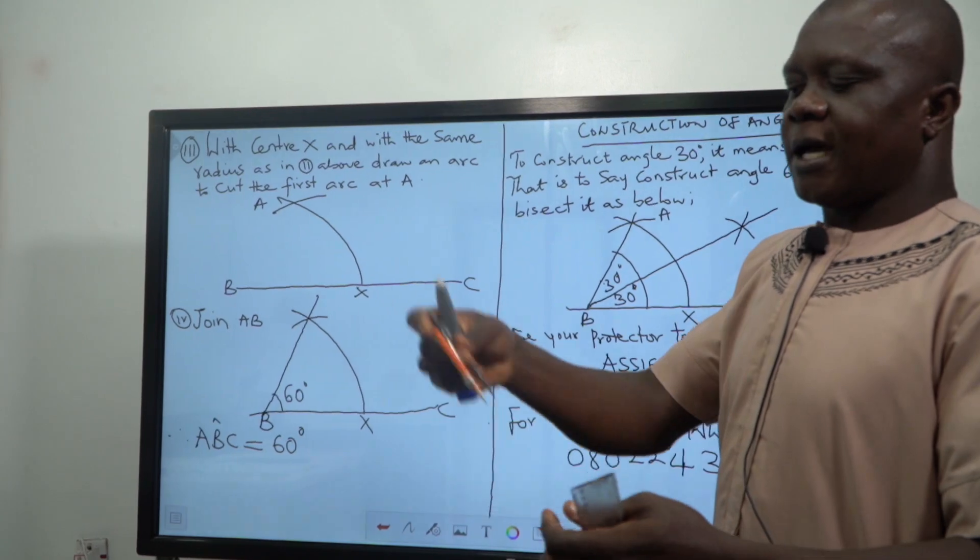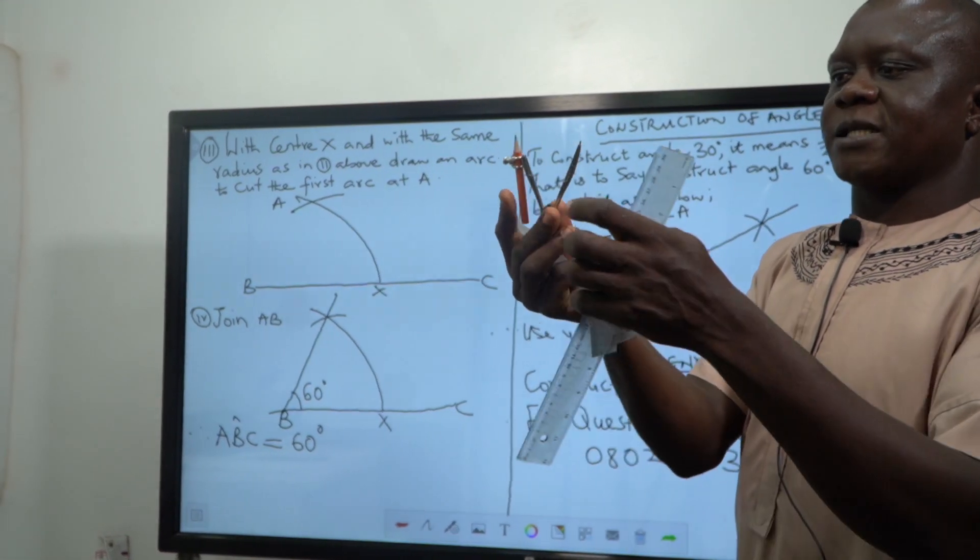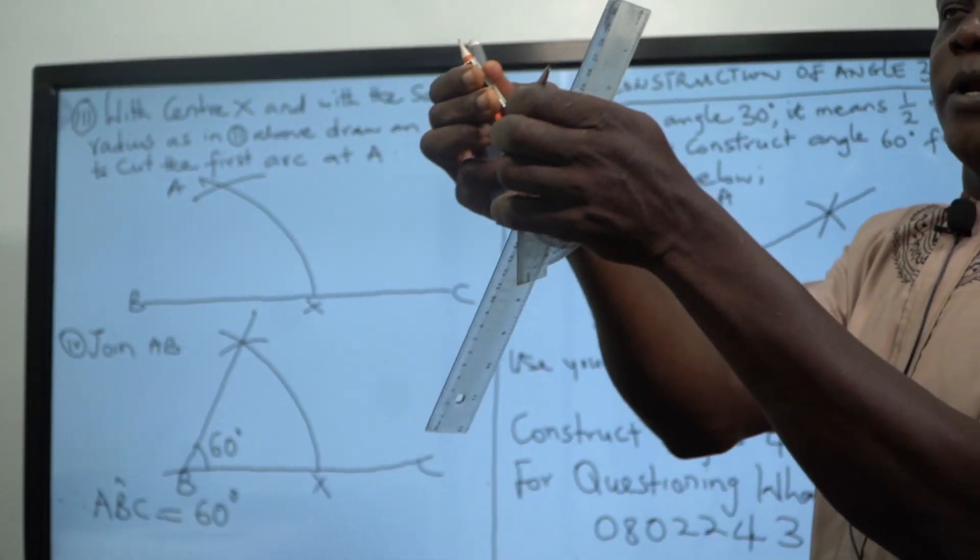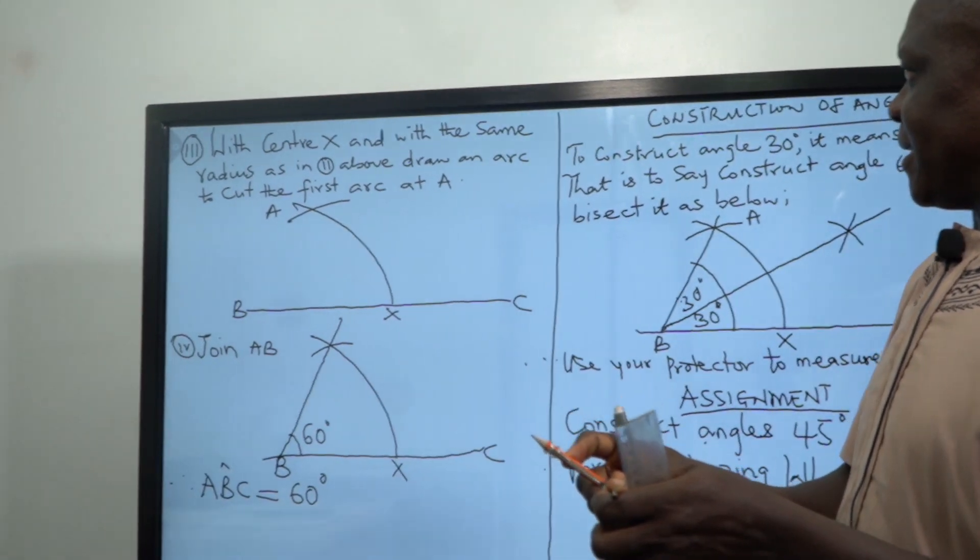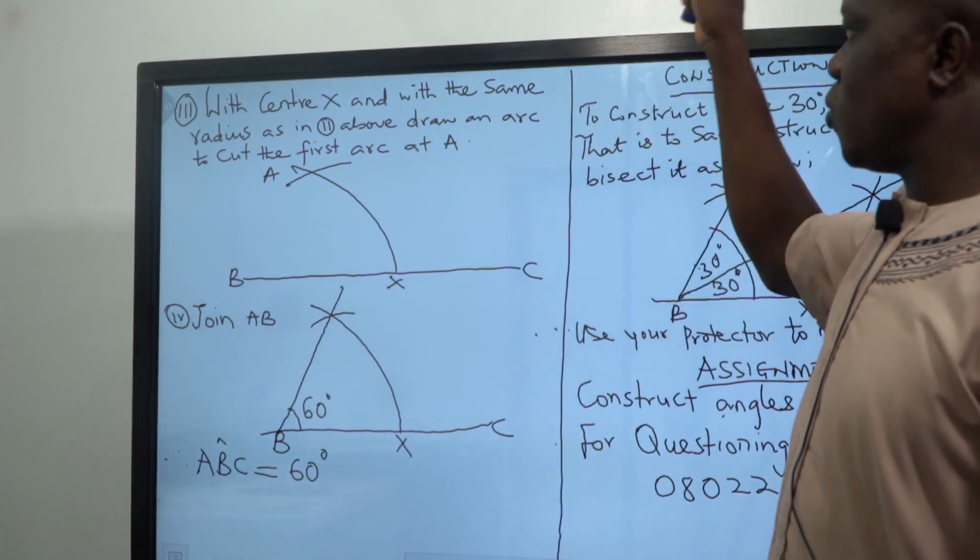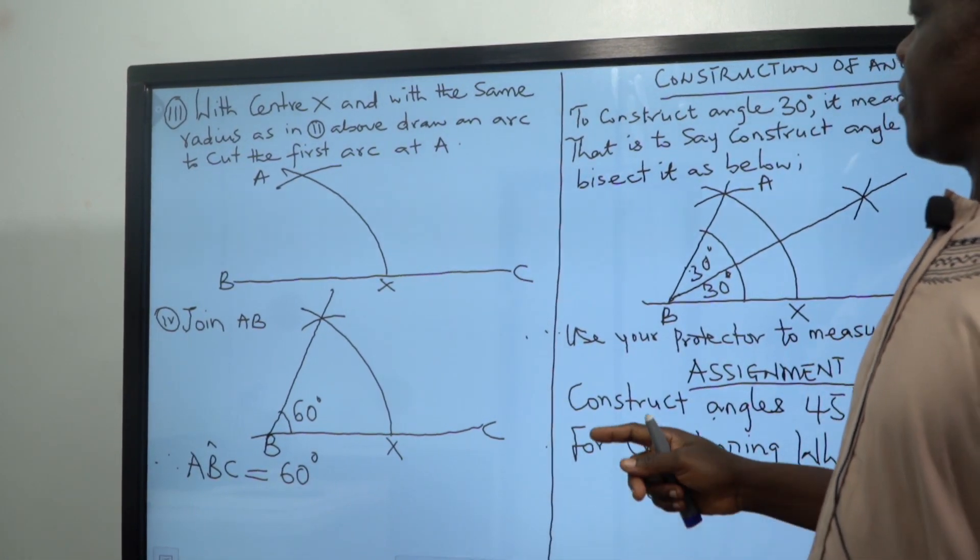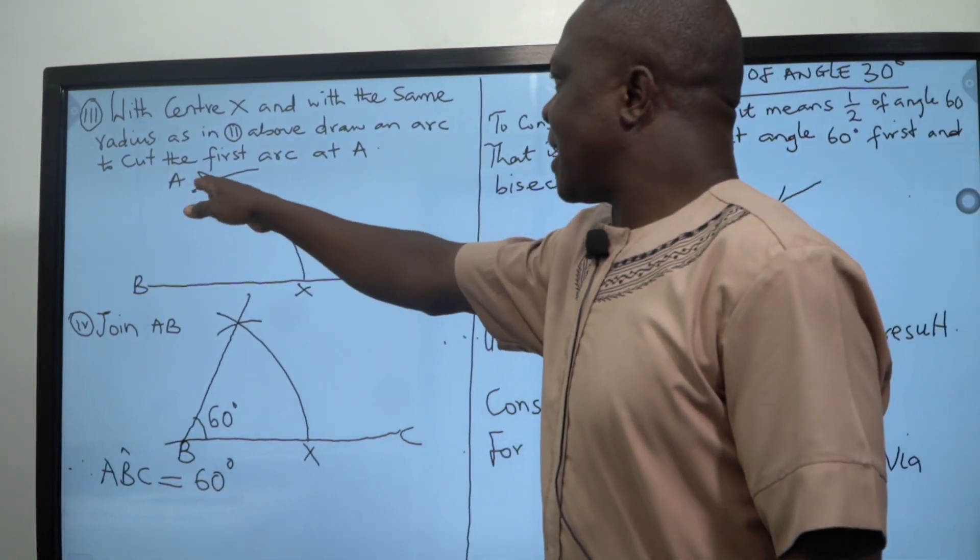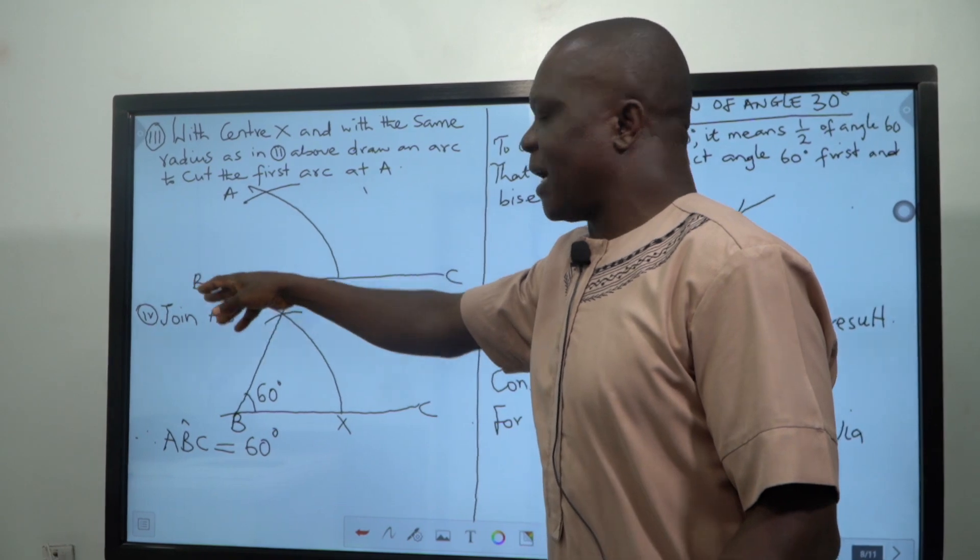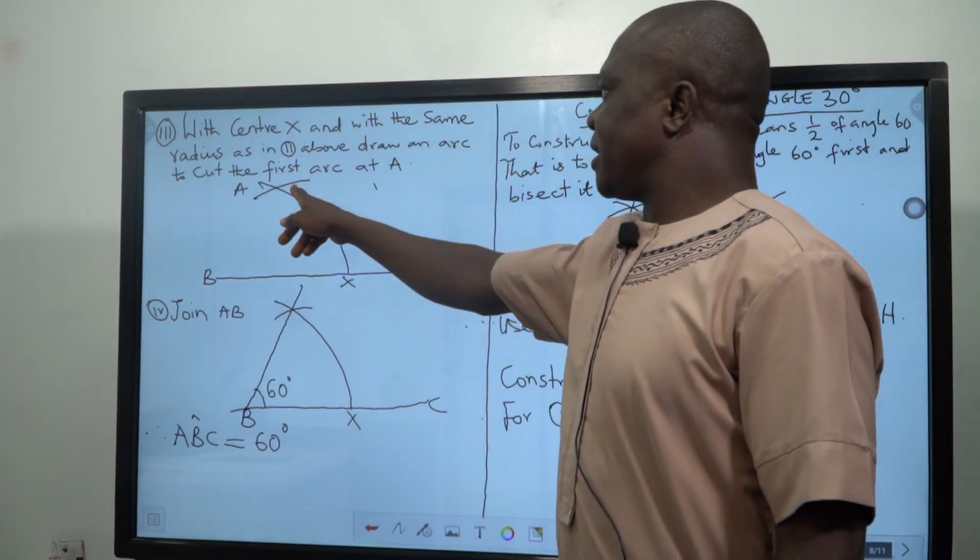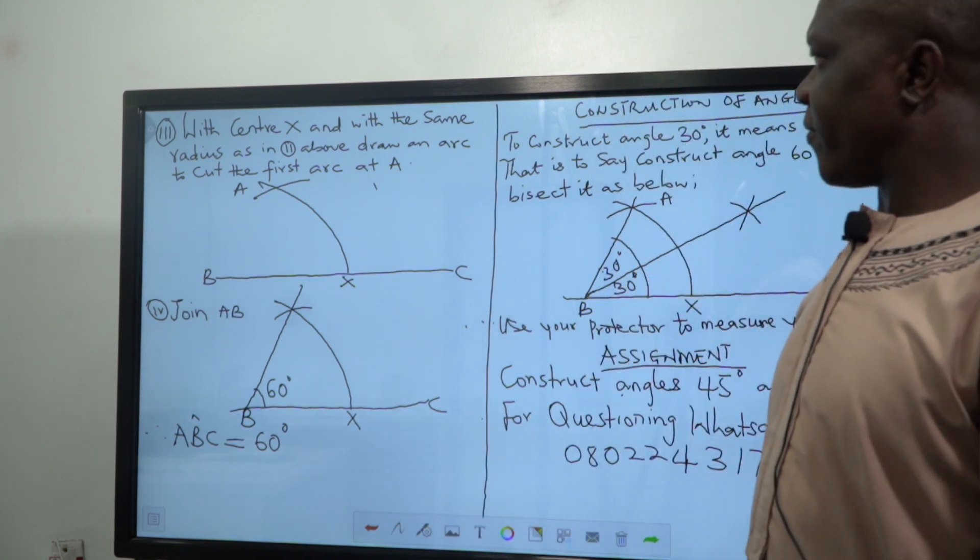We say with center X and with the same radius. The radius is how you open this compass. If you like you can make your own to be small. If you like you can open it as wide as anything. I said with the same radius as in two above, draw an arc. The arc is not other than this line we are seeing, we are doing like this is what we regard as an arc to cut the first one. It has cut the first one.